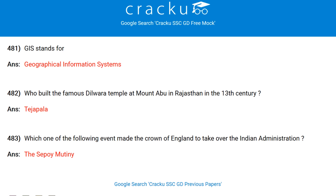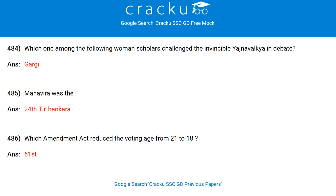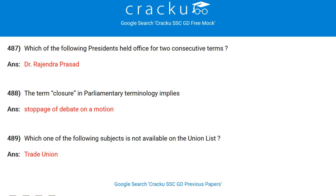Suez Canal joins the Red Sea and the Mediterranean Sea. On which river is the Nagarjuna Sagar project located? Krishna. Which of the following is a trans-Himalayan river? River Sutlej. GIS stands for Geographical Information Systems. Who built the famous Dilwara Temple at Mount Abu in Rajasthan in the 13th century? Tej Pala. Which event made the Crown of England take over Indian administration? The Sepoy Mutiny.